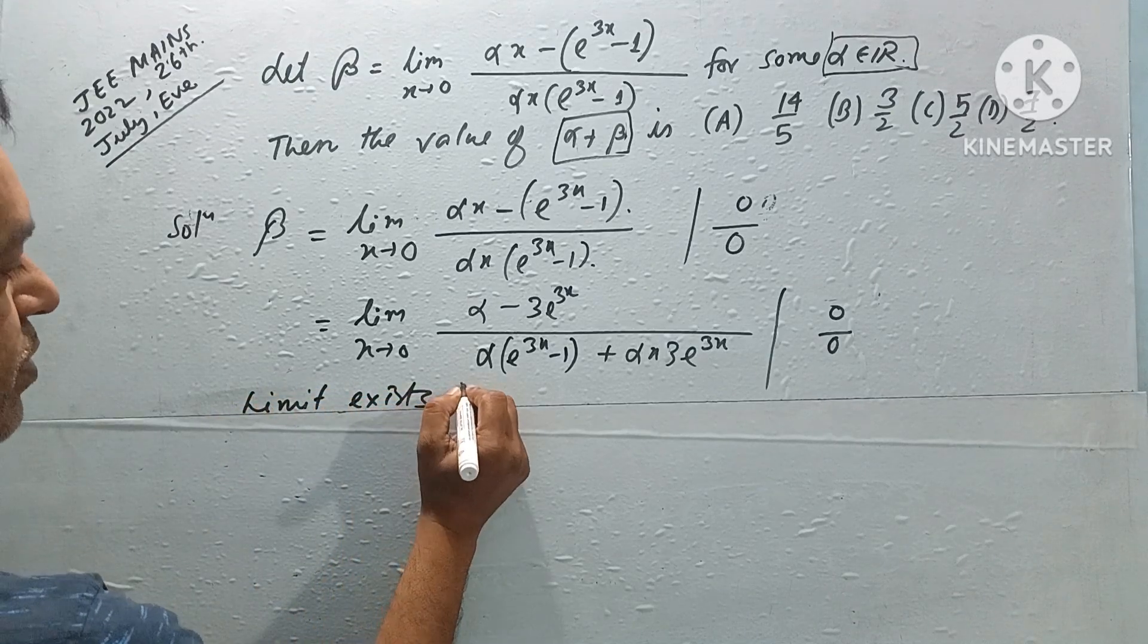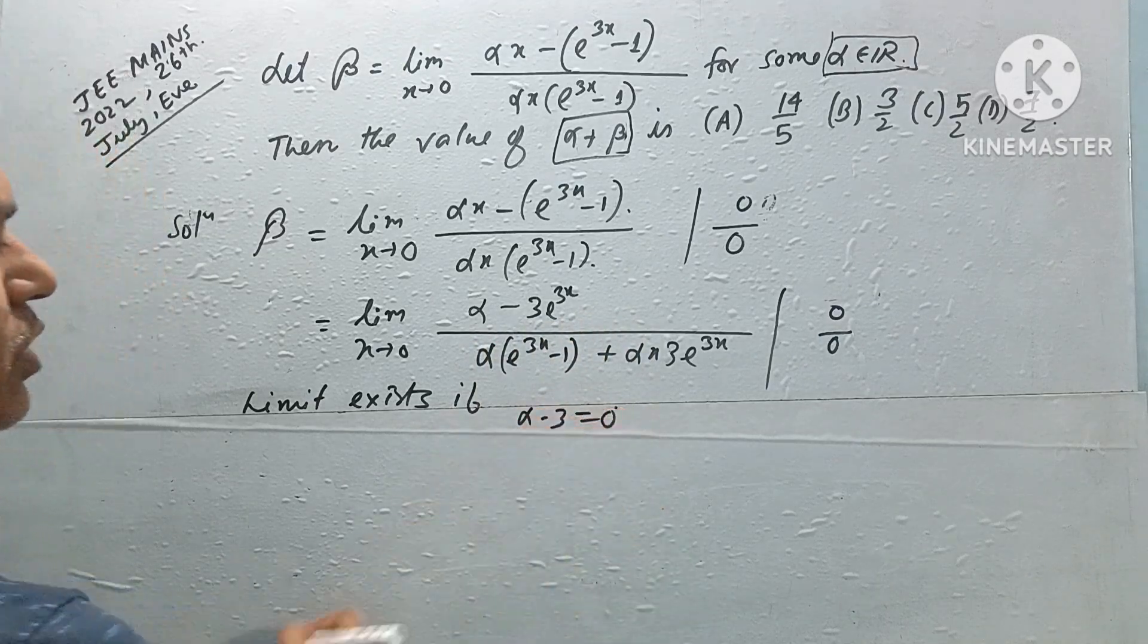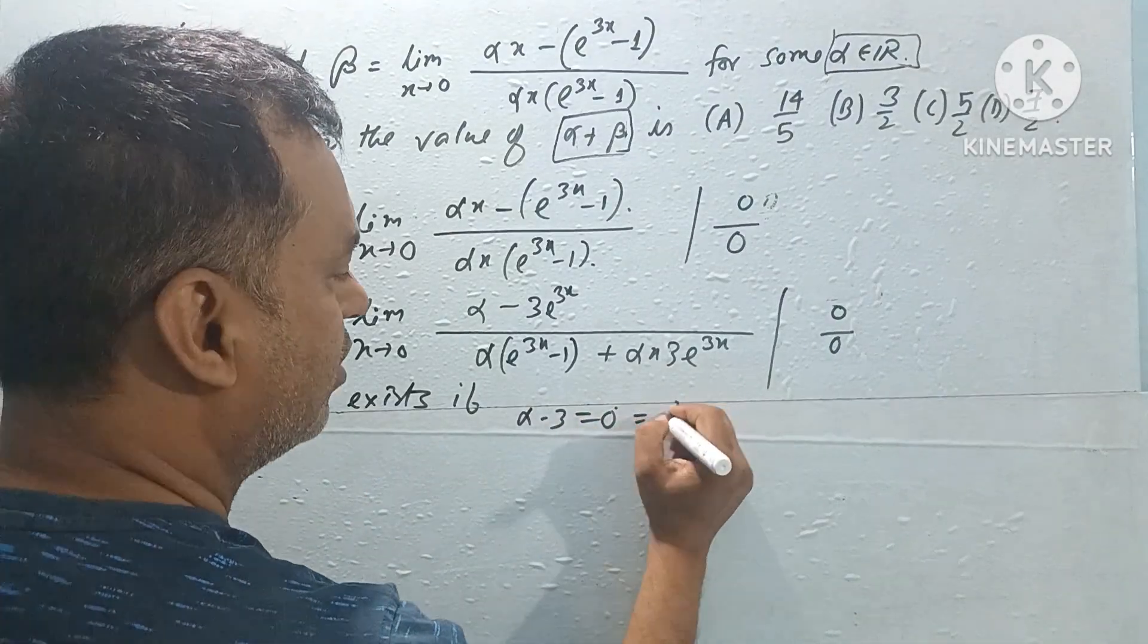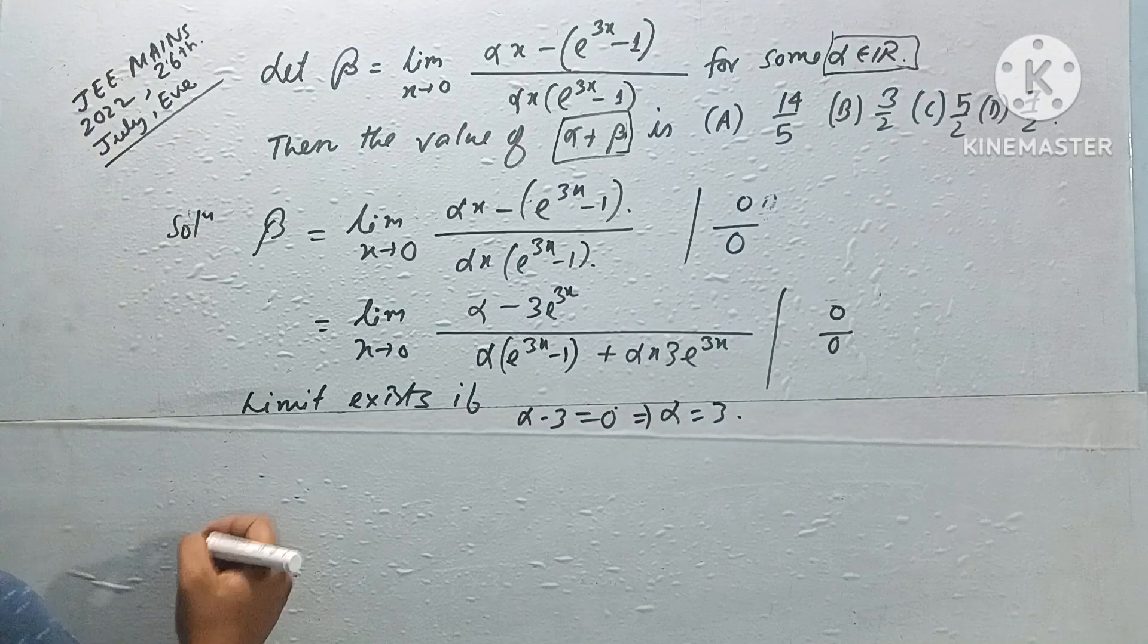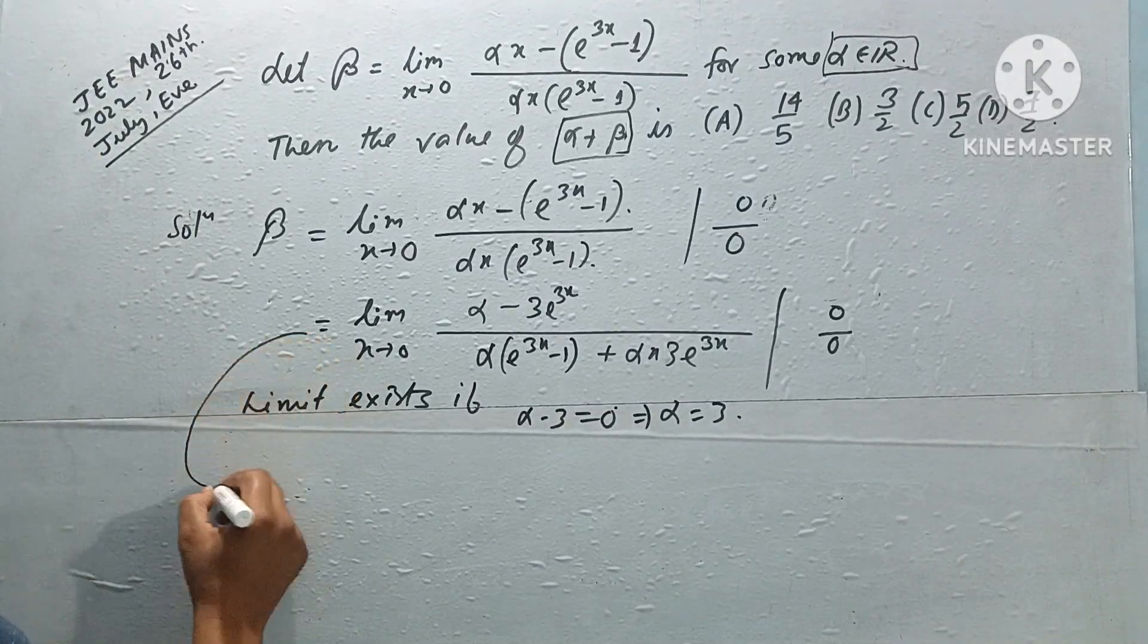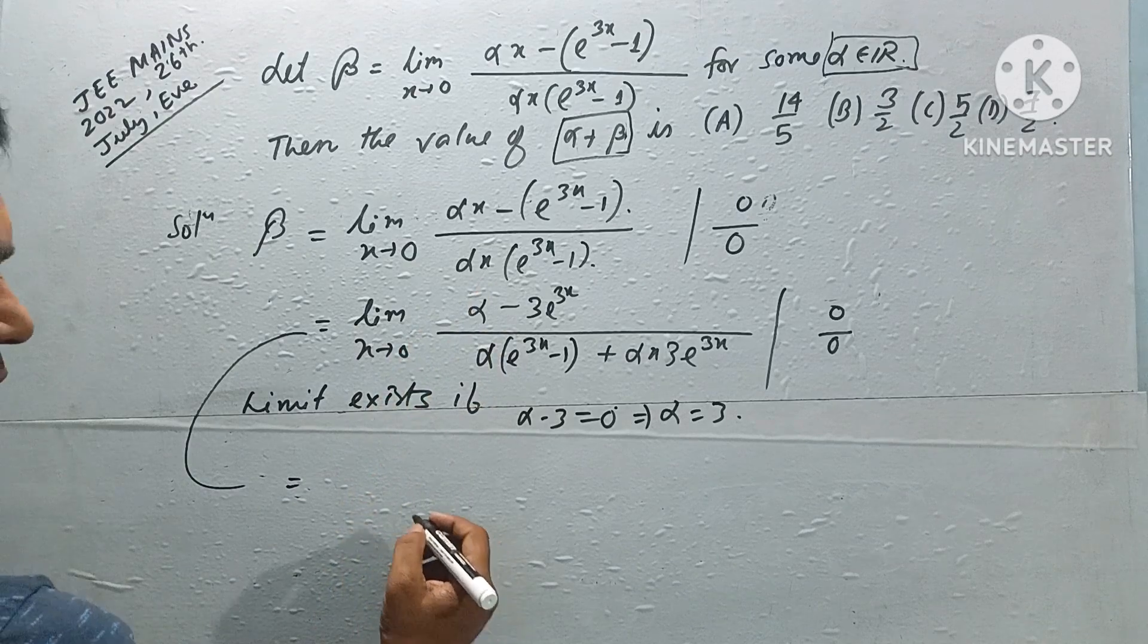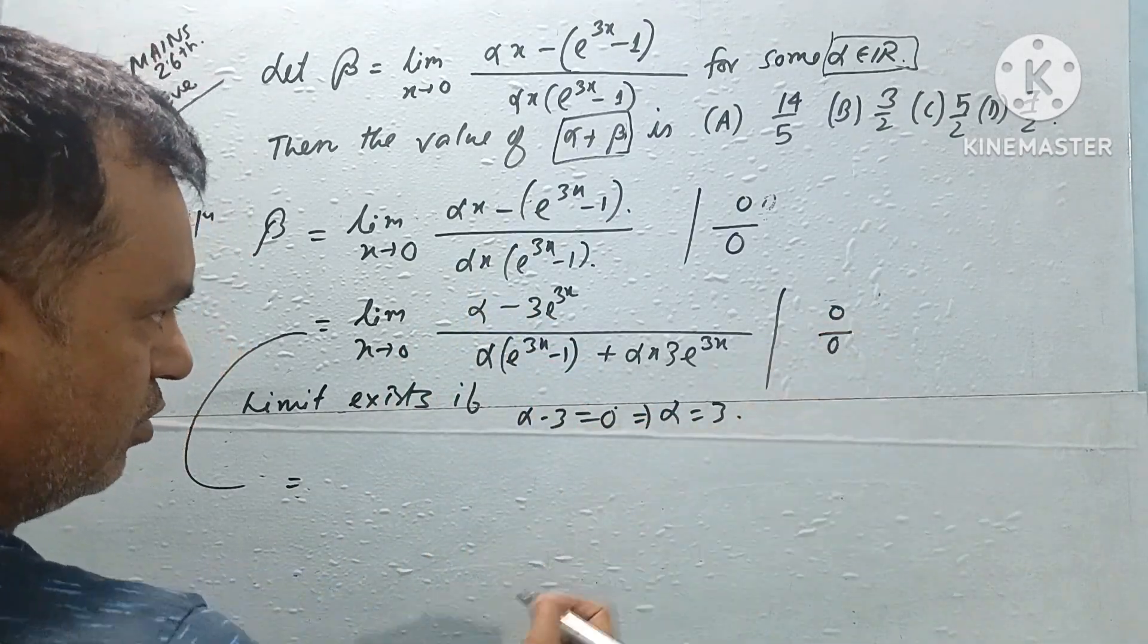Limit exists if alpha minus 3 equals zero. Putting alpha zero in the denominator makes it zero. This means alpha equals 3. When alpha equals 3, the limit exists. Then we apply L'Hospital's rule again since it's zero by zero form.